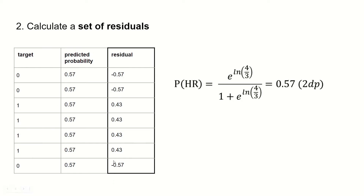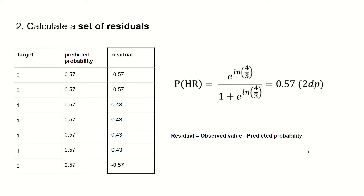So this 0.57 forms our initial predicted probability for all of our entries. We have this predicted probability column and we're predicting a 0.57 probability for each entry that the person has heart disease. We can then use our target and predicted probability to calculate a set of residuals using the formula: residual equals observed value minus our predicted probability. So we have minus 0.57 for the cases where our target is 0, since 0 minus 0.57 gives us minus 0.57, and we have 0.43 for the cases where our target is 1, since 1 minus 0.57 gives us 0.43.